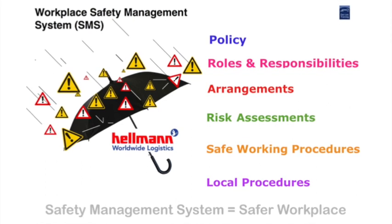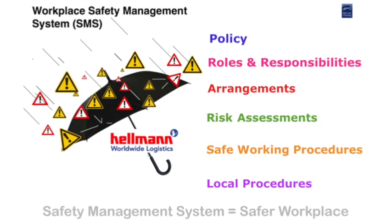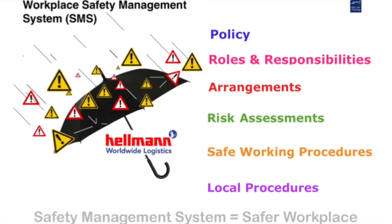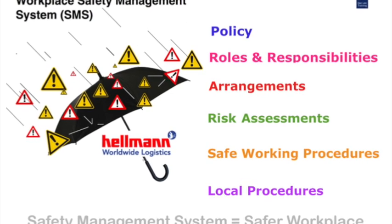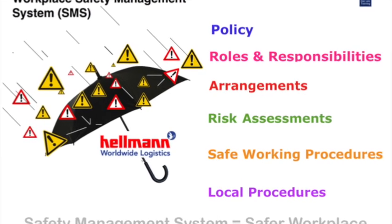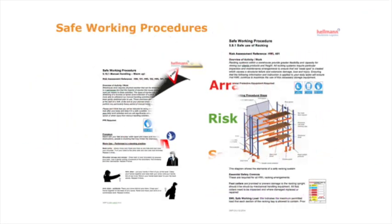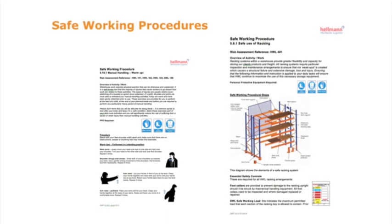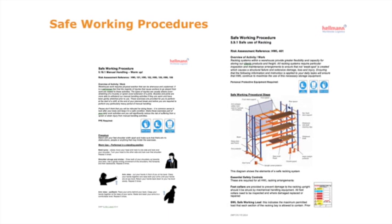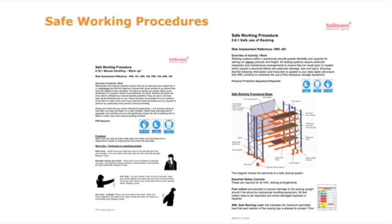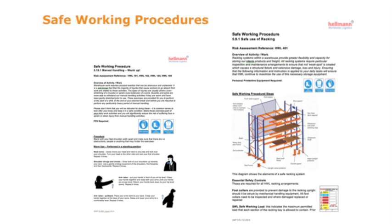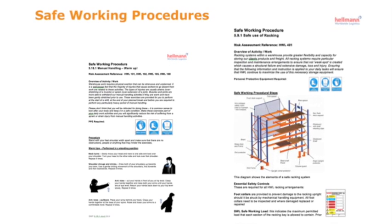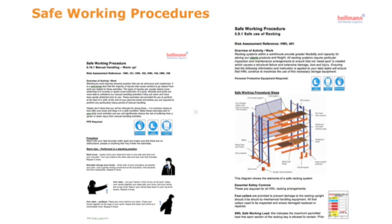Safe working procedures appear after the risk assessment section within our safety management system. Ideally, but not always, the need for a safe working procedure is directed by a risk assessment. So what is a safe working procedure? To put it in simple terms, it is a written risk control.